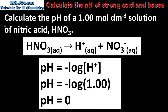Next we will calculate the pH of a 1.0 mole per decimeter cubed solution of nitric acid. Like hydrochloric acid, nitric acid is a strong monoprotic acid, so a 1 mol dm⁻³ solution of nitric acid will contain 1 mol dm⁻³ of hydrogen ions.